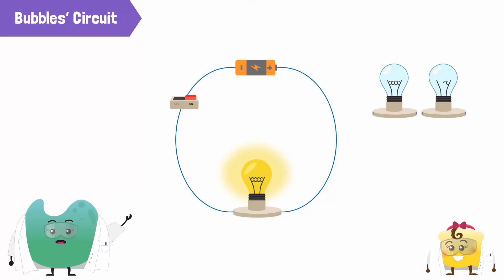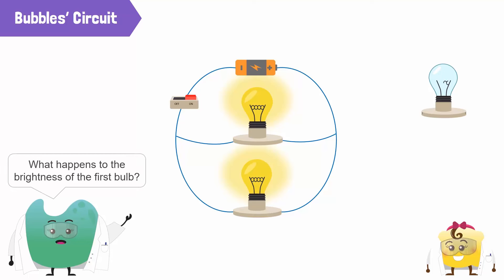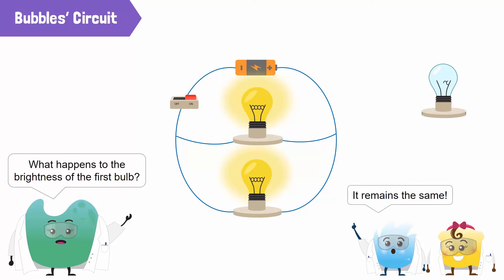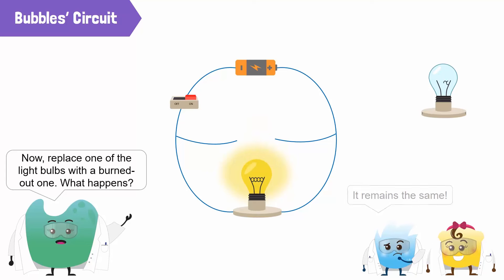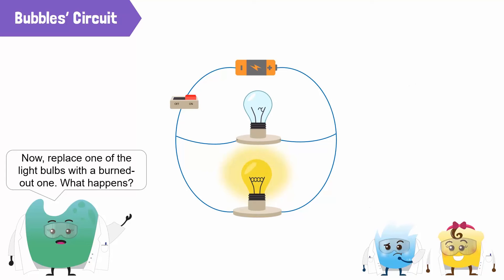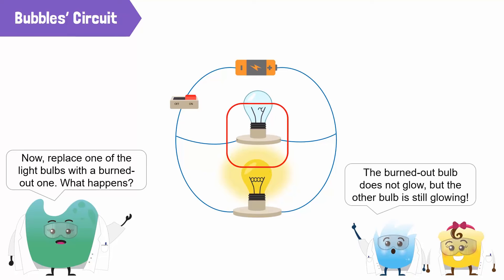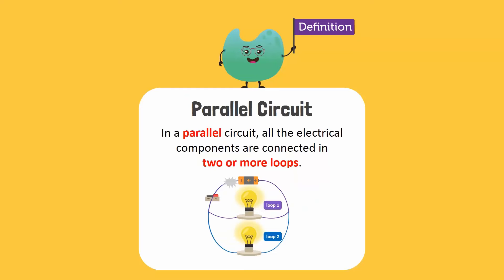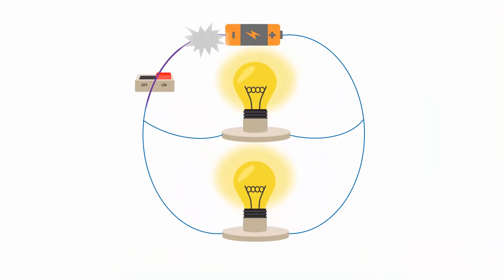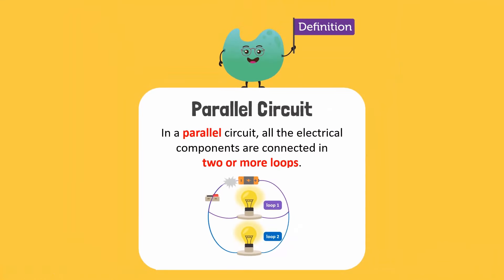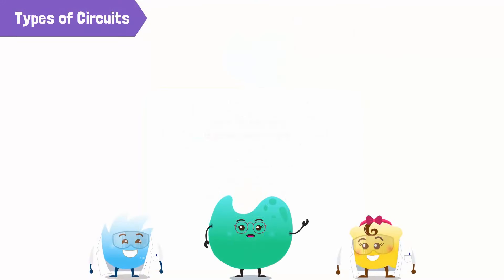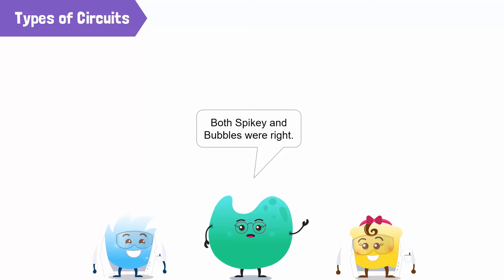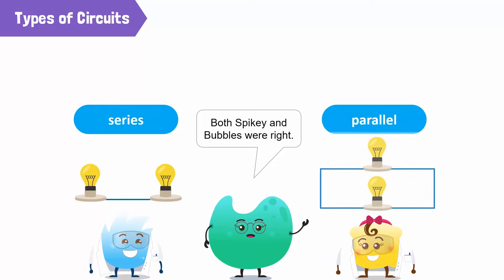Now let's try Bubble's suggestion — we'll add another bulb above the first one. What happens to the brightness of the first bulb? It remains the same. Correct. Now replace one of the light bulbs with the burned out one. What happens? The burnt out bulb does not glow, but the other bulb is still glowing — it is not affected. Excellent observation. This is a parallel circuit. If all the electrical components are connected in two or more loops, then it is a parallel circuit. In a parallel circuit, there is more than one path for the current to flow. Each loop is independent, so the current in one loop will not affect the current in another loop. So, both Spiky and Bubbles were right — Spiky connected the bulbs in series, whereas Bubbles connected the bulbs in parallel.